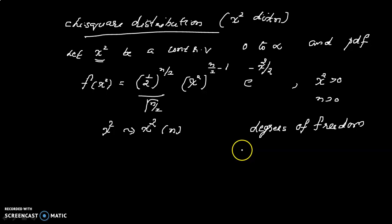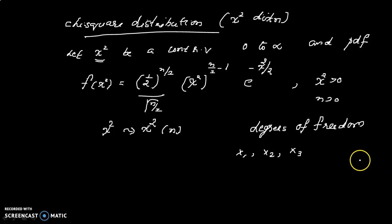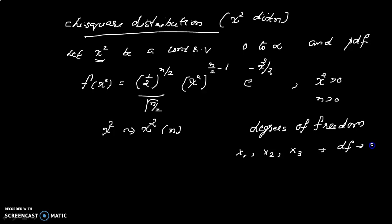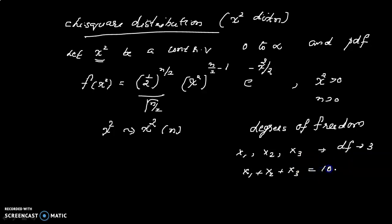Now suppose we have three random variables: x1, x2, and x3. These are three independent random variables. The degree of freedom would be 3, so df equals 3. However, if we impose a condition such as x1 + x2 + x3 = 10, then the sum must equal 10.